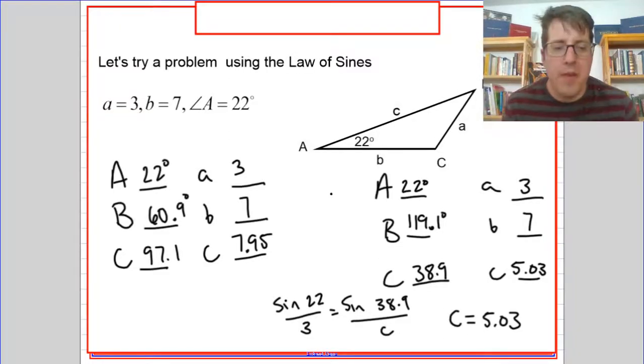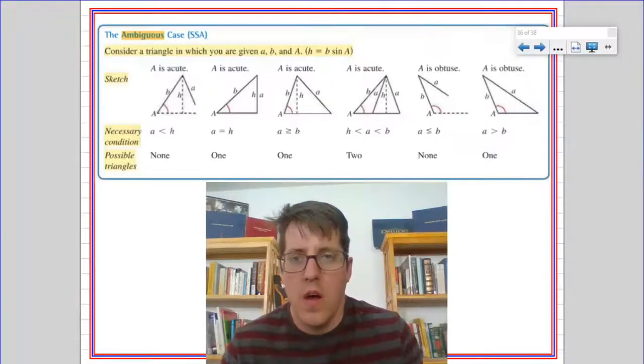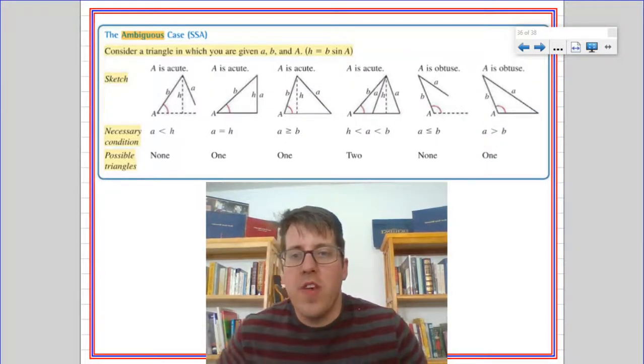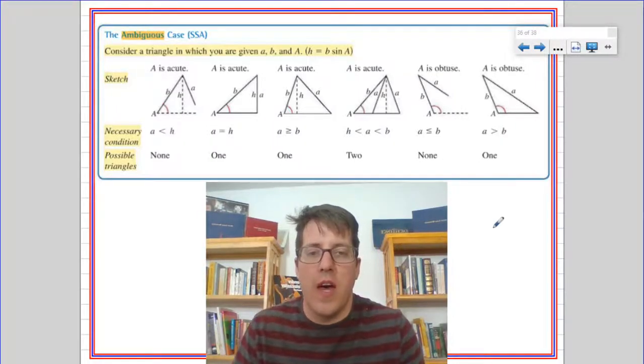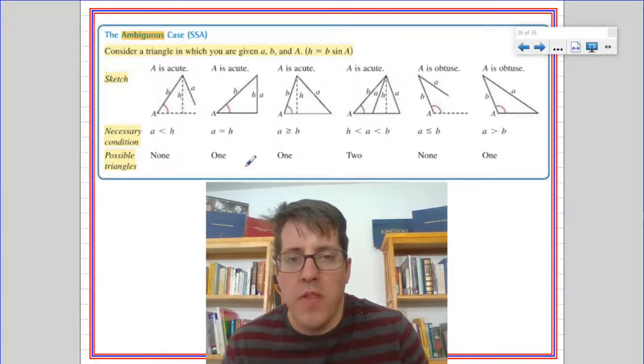So on a problem that fits into the ambiguous case, if there are two possible triangles, you would need to record both of those possible triangles to have constructed or have solved all of the triangles that could possibly come out of that given information. For those of you who love a good formula, there is a way to figure out ahead of time what sort of situation you're going to be in.